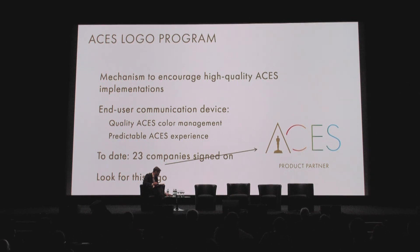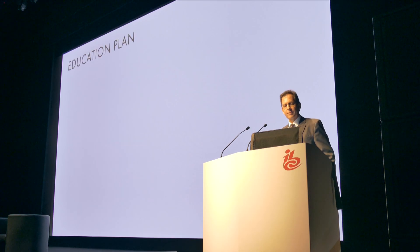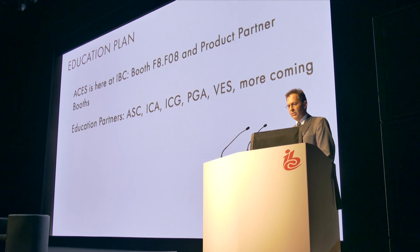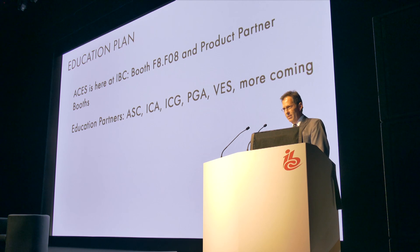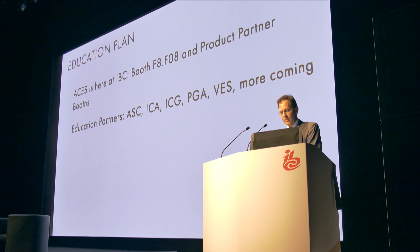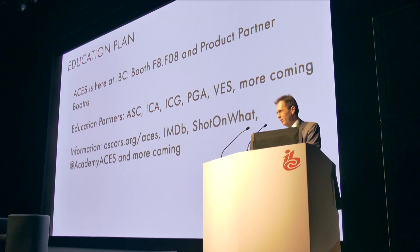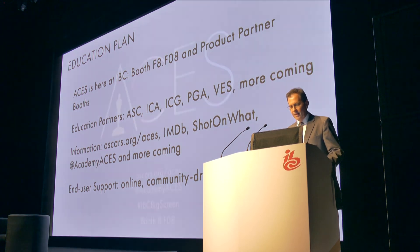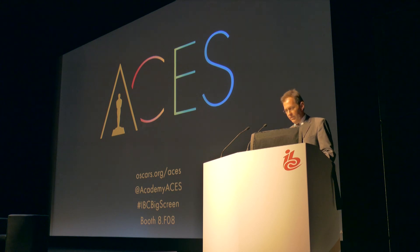Usually logos are about branding, but in this case we realize that an industry-wide behavioral shift is needed, and a little motivation to do that would probably help. That's where we came up with the ACES logo — it's a mechanism to encourage high-quality ACES implementations and an end-user communications device. It means quality ACES color management on products associated with the ACES logo, and a predictable ACES experience — you know what you're going to get. To date, 23 companies have signed on to the program. Within the coming months, you'll see some ACES-logoed products. We have many education partners: the American Society of Cinematographers, International Colorist Academy — they're having a mixer tomorrow night — the Producers Guild of America, and the Visual Effects Society. There are plenty of resources on the web, an online community-driven help desk for end-user support, and we'll have plenty of time for questions at the end.